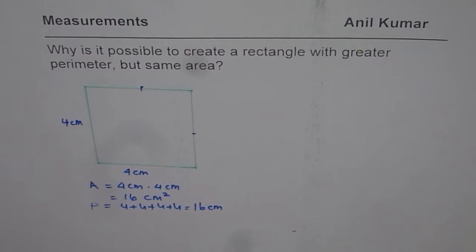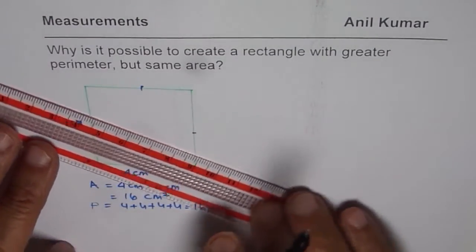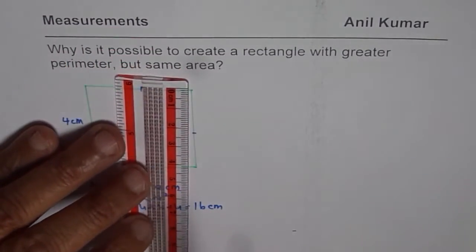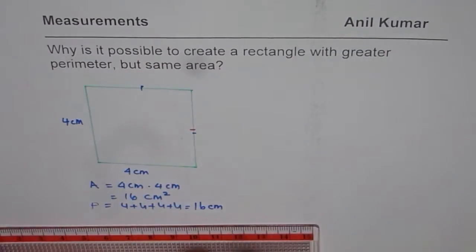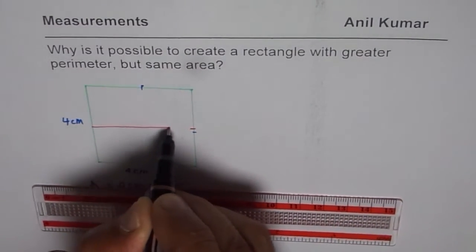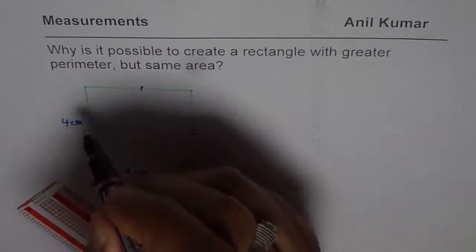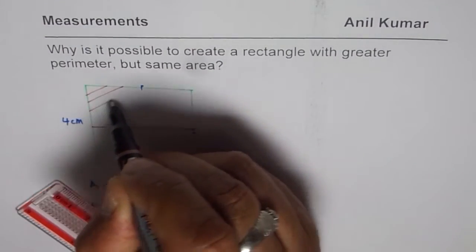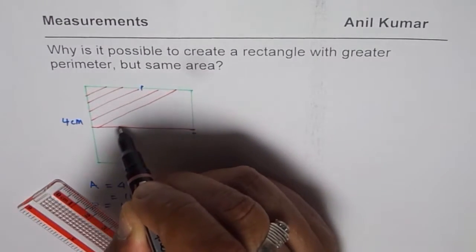Now, let us divide this square into two parts. So, if I divide it into two parts so that each has a width of 2 centimeters. So, what I am trying to do here is that I am going to divide it like this. So, what we have here is this square divided into two parts. And if I place the top part on the side of the bottom part, what happens? Area remains same.